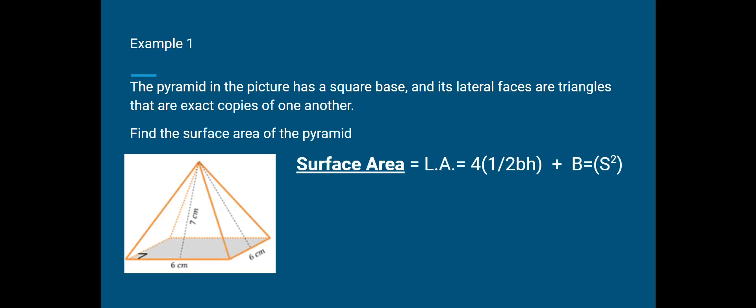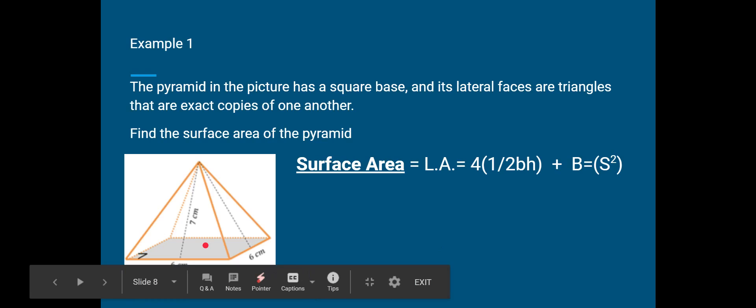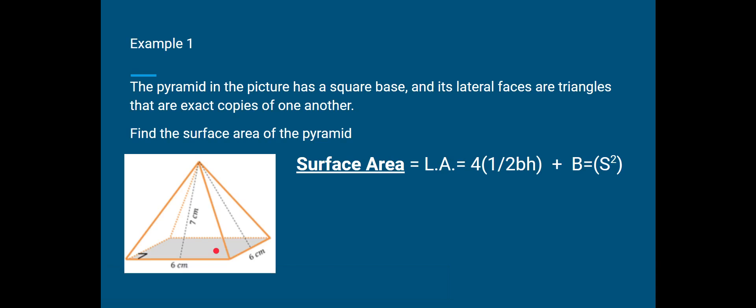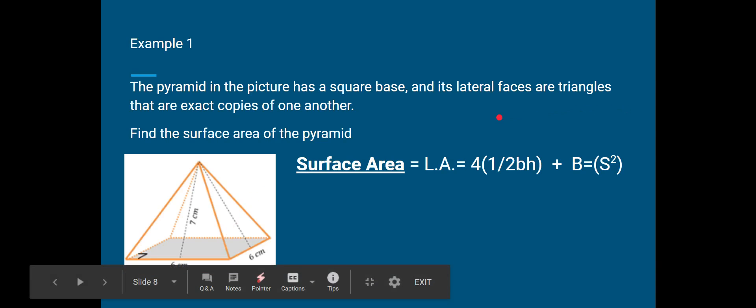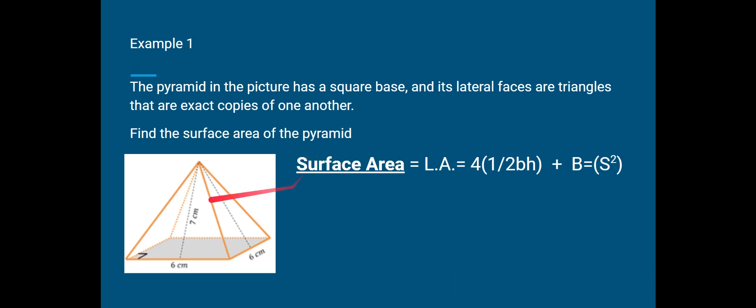Okay, example one. The pyramid in the picture has a square base. Here's the pyramid, and if you look at the bottom here, this is a square base. Its lateral faces are triangles that are exact copies of one another. We have four of them going all the way around. Find the surface area of the pyramid.